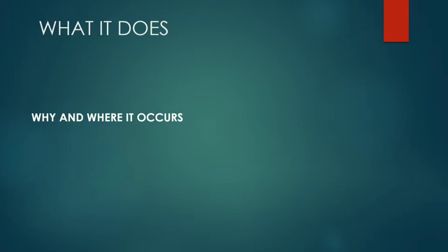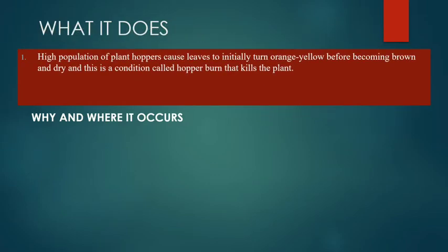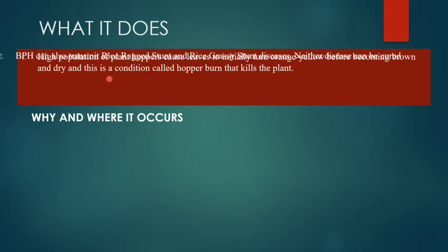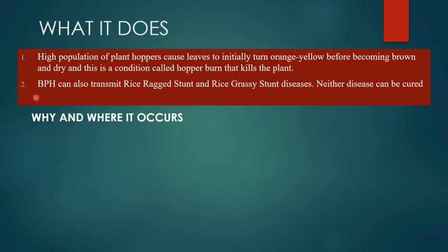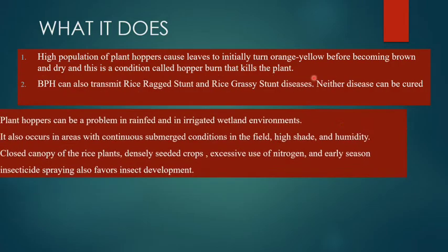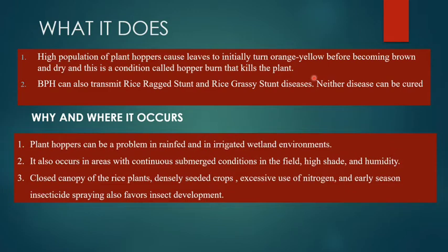High populations of plant hoppers cause leaves to initially turn orange-yellow before becoming brown and dry. This condition is called hopper burn, which kills the plant. BPH can also transmit rice ragged stunt and rice grassy stunt diseases; neither disease can be cured.